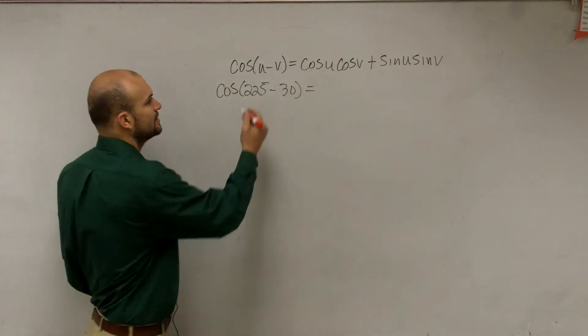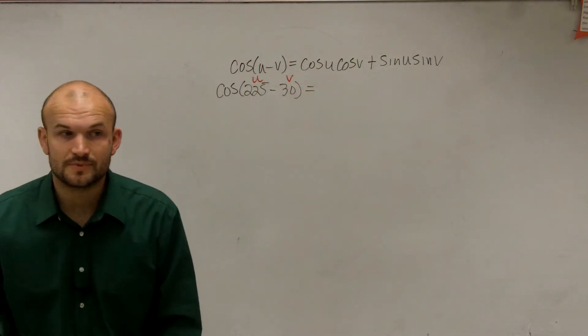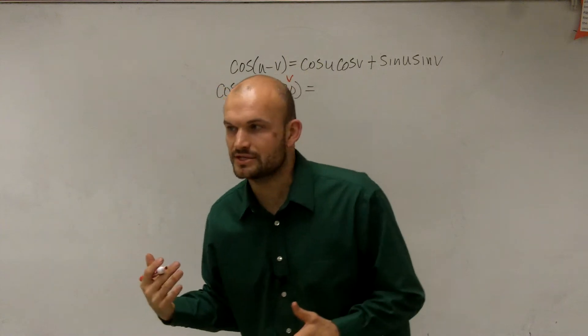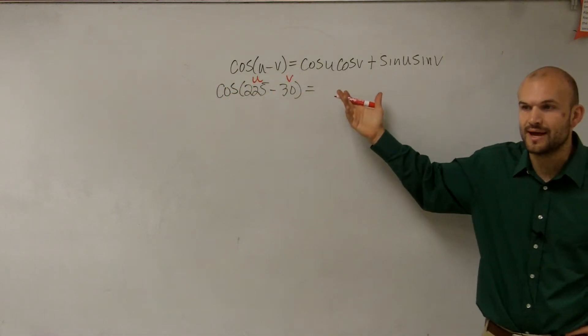So simply what we're going to do is just say, all right, well, here's our u and here's our v. But now what we need to do is we need to evaluate, before we can even plug it into the formula, we need to evaluate what's the cosine and the sine for those two angles.